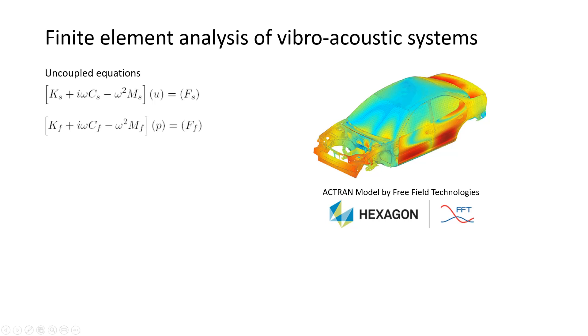And that in the frequency domain, the dynamic equations for representing the structure is a complex matrix, which is the stiffness matrix plus i omega times the damping matrix minus omega squared times the mass matrix. This overall is called the mechanical or the structural impedance matrix and we'll denote that by Zs, and this matrix multiplied by the unknown displacement is equal to the externally applied forces Fs.